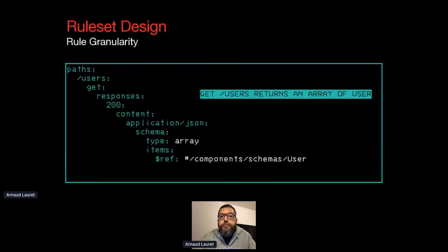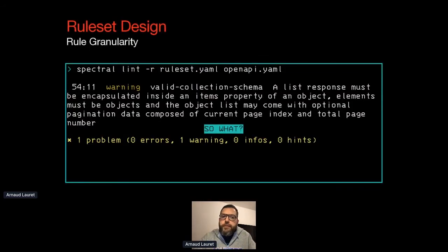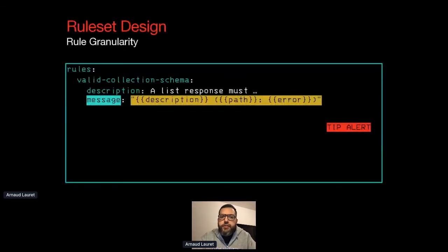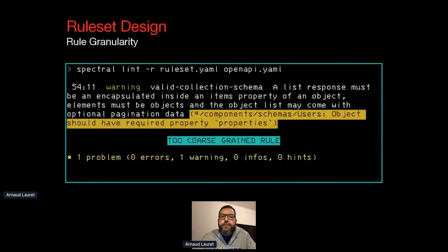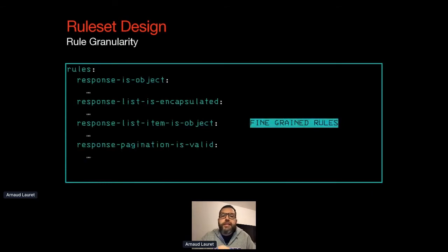What happens if we run Spectral with this rule on an OpenAPI file where GET /users returns an array of user? Spectral detects the problem, but what exactly is the problem? Is there a mistake on pagination data, or is it something like list items not being objects? Customizing the message to add the problem path and error message may give more clues — the user schema is missing a property named 'properties'. That's not really useful unless you are an expert of your guidelines, your Spectral rules, JSON Schema, and the OpenAPI Specification.